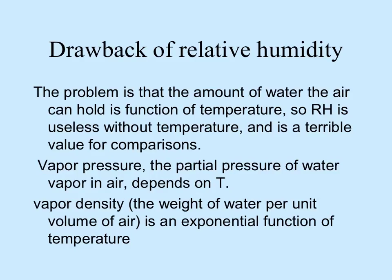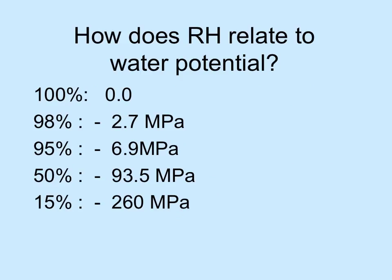Vapor density is an exponential function of temperature. When humidity is 100%, the water potential is zero, but it increases dramatically in the negative direction with decreasing humidity. At 98% humidity, water potential is negative 2.7 megapascals. At 95%, it's more than double that. At 50% humidity — what many people consider comfortable — the water potential is negative 93 megapascals, and very low humidity can have very negative water potential in the air.